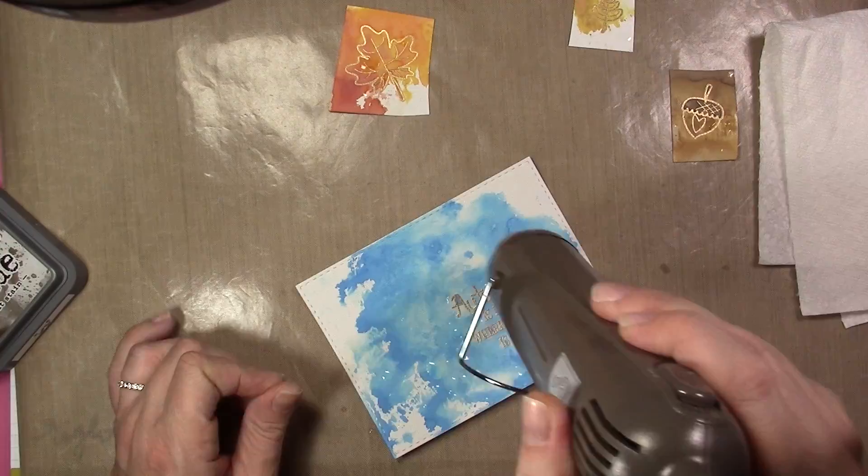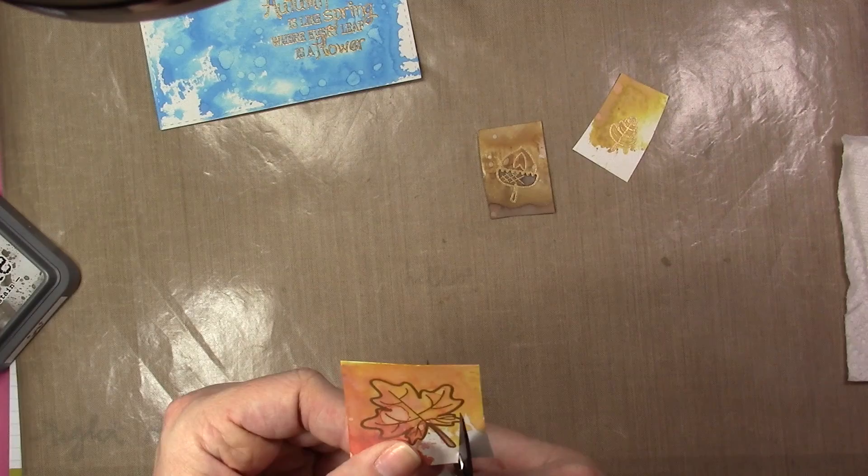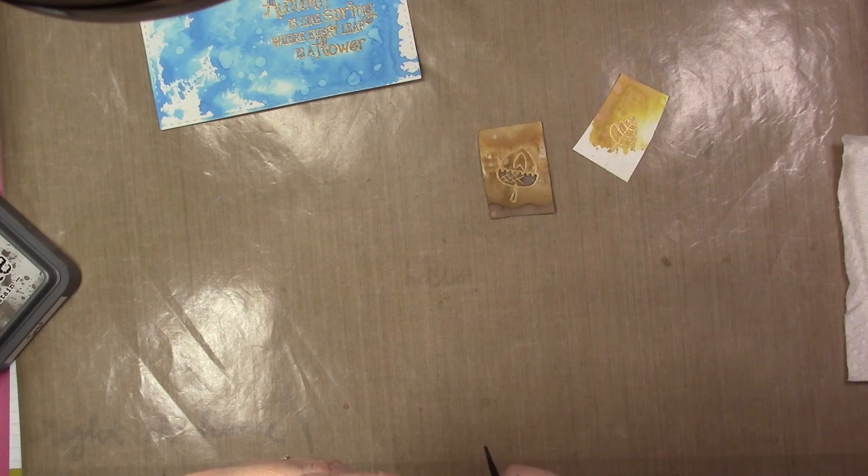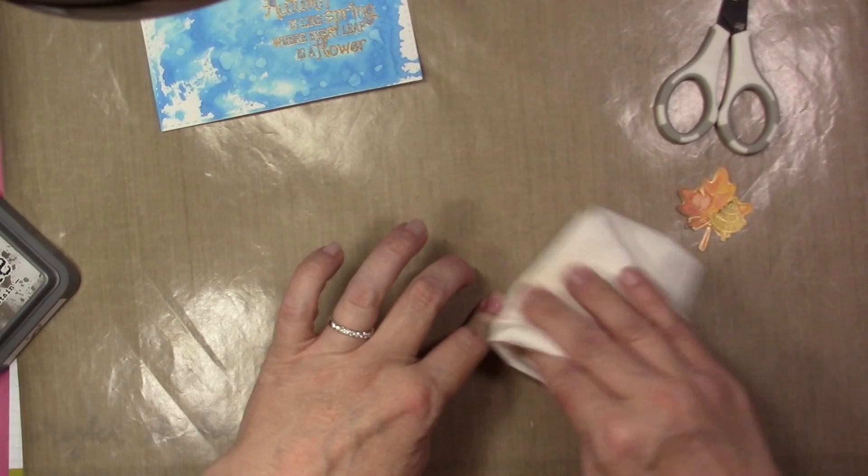Once I'm done doing that, I'm going to fussy cut each of the images out. Then I'm going to take a paper towel and run it across the embossed images to make sure I picked up any excess Distress ink that might be laying on there. Because this is a pigment-based ink, you don't want it to smear on the rest of your project.